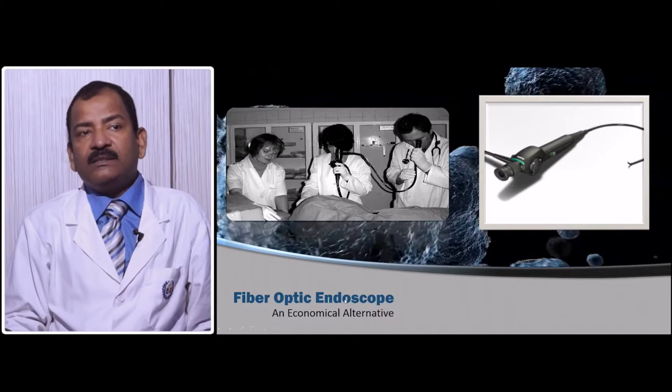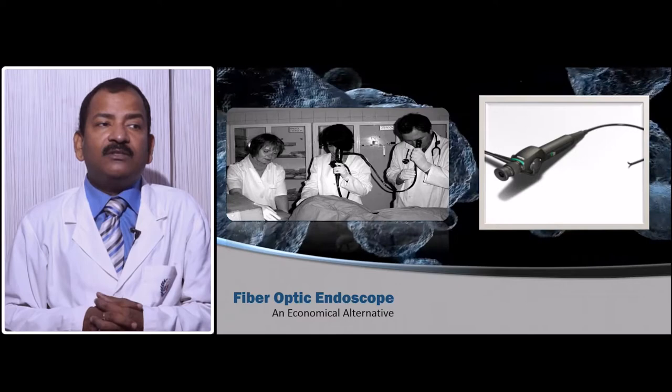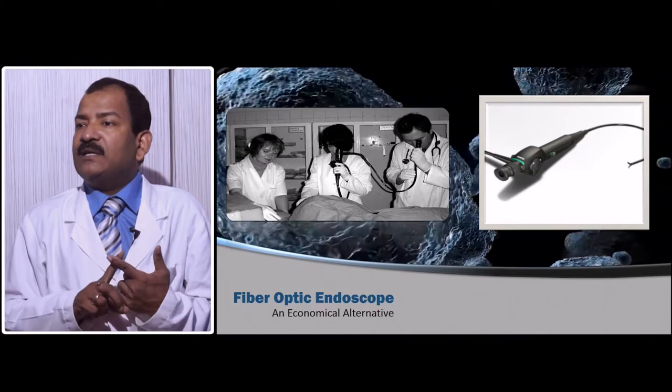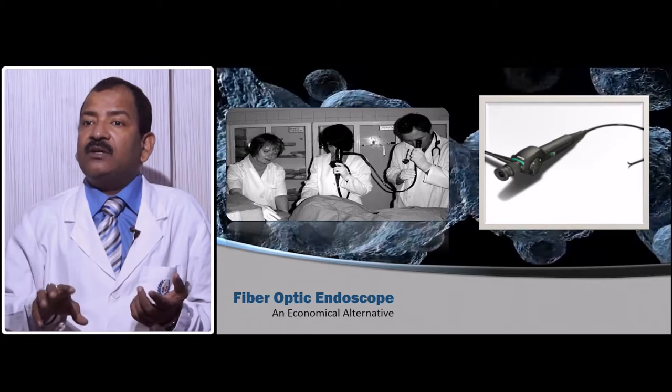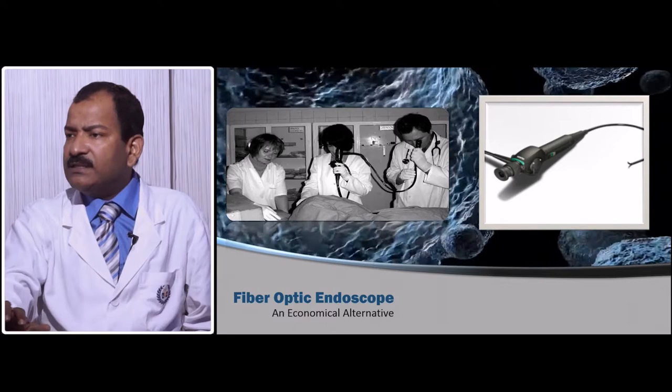Fiber optic endoscopes are very good but have a few drawbacks. One major drawback is that you cannot do digital enhancement of the image — whatever image you have is purely optical, with no electronic part inside. So you cannot adjust the shutter speed, fibroscope filter, or aperture, and you cannot do white balancing, because it is a pure optical object with no electronic circuit inside.